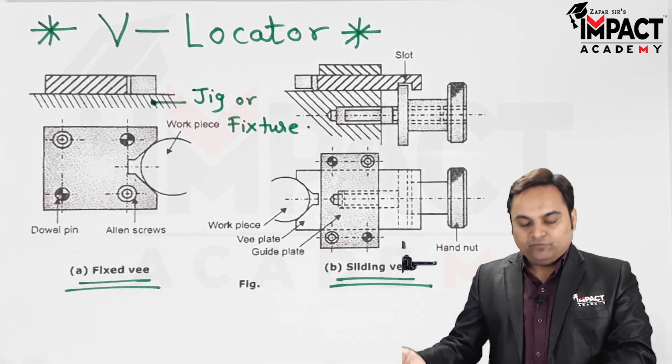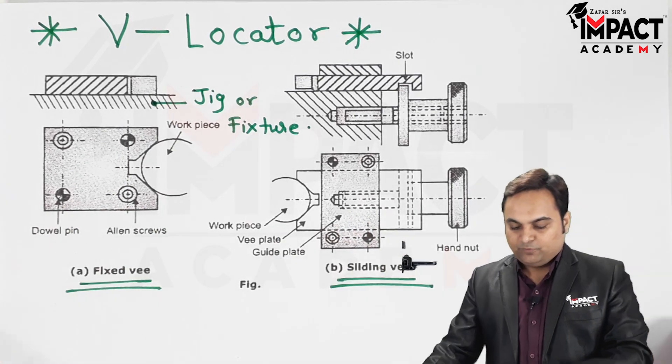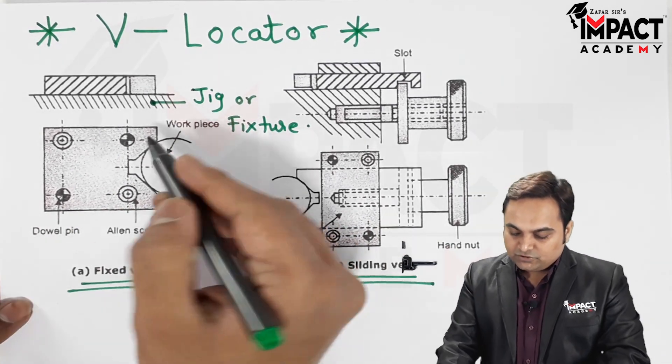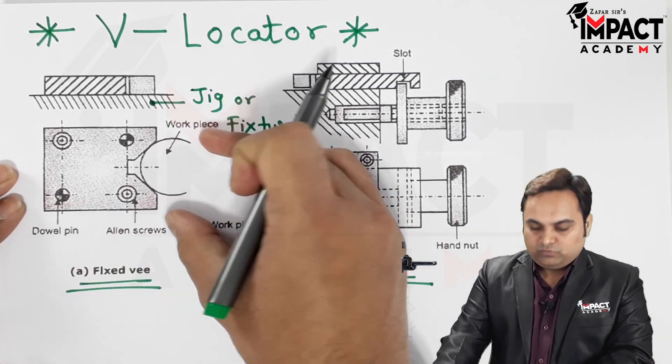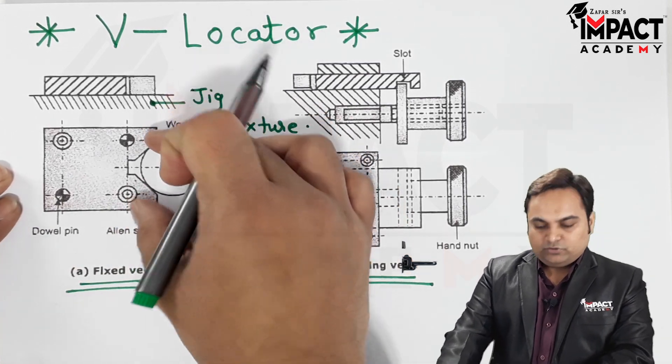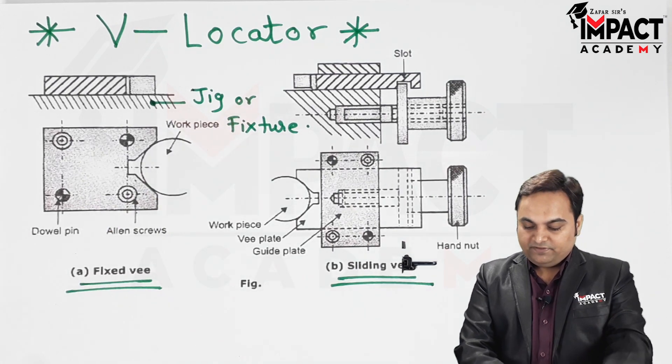Now what happens, as the locator is fixed here, we have to put the cylindrical workpiece in contact with this locator. As we see here, there is this workpiece cylindrical in shape.